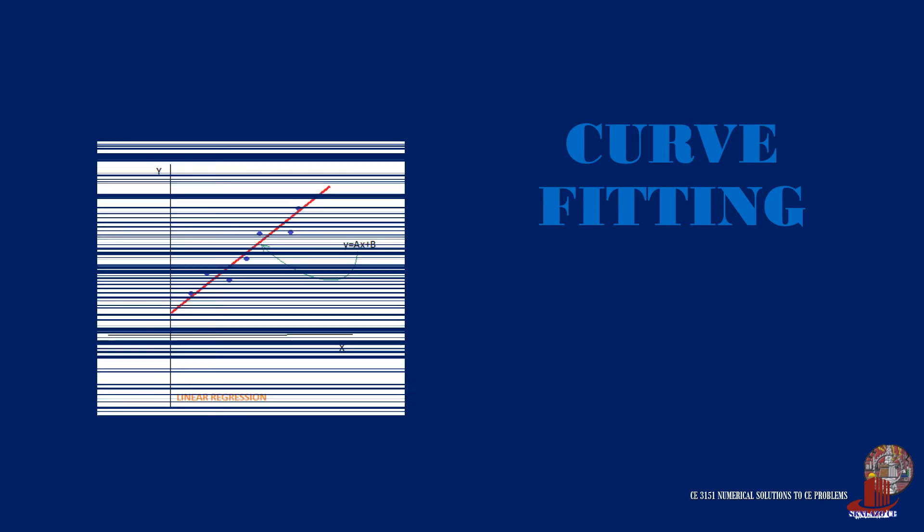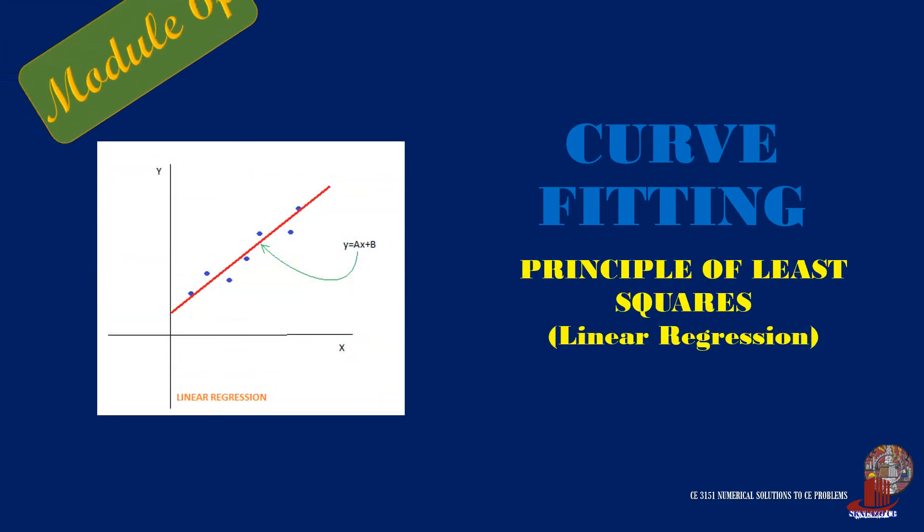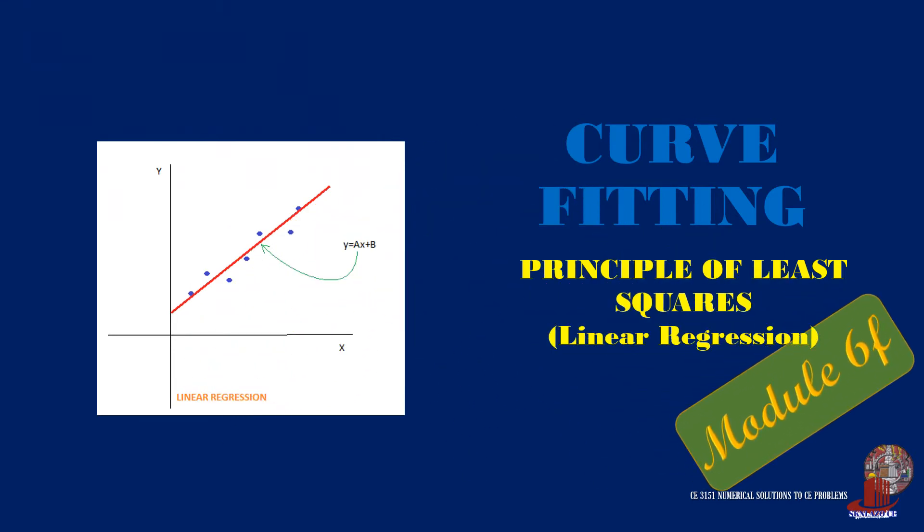The method with least discrepancy between the true value and computed value for a set of data is least squares. In this video, the principle of least squares is discussed with different processes of arriving at the equation of linear regression. Welcome to Numerical Solutions to CE Problems.